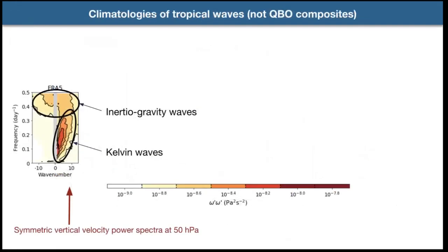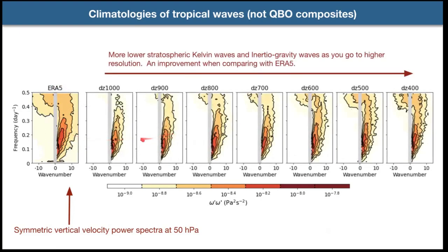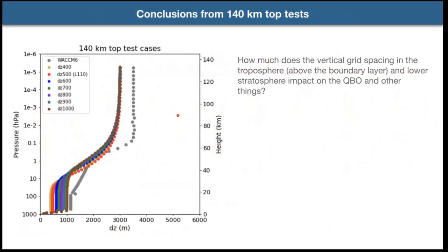More generally, there is more lower-stratospheric resolved wave activity at higher resolution. The climatological wave spectra — power spectra of symmetric vertical velocity at 50 hPa — show that the Kelvin wave part and the inertia-gravity wave part of the spectrum both increase with resolution. We were convinced that 500-meter grid spacing is probably the optimum, because you do see a jump in the role of resolved waves in driving the QBO at that resolution.